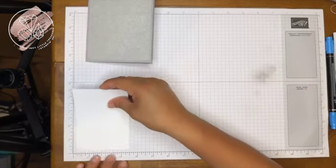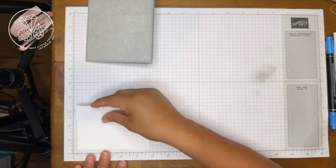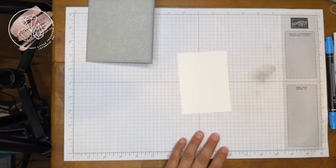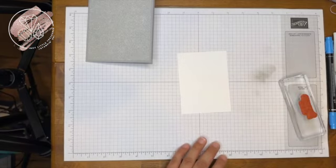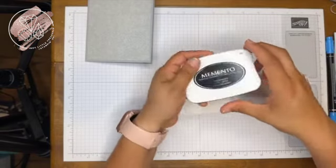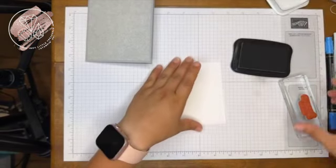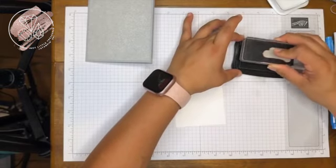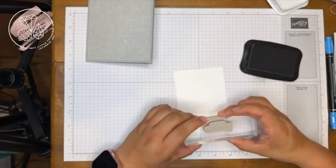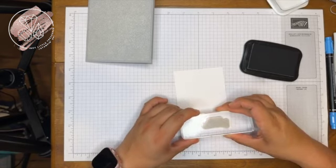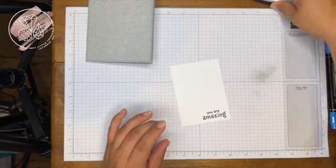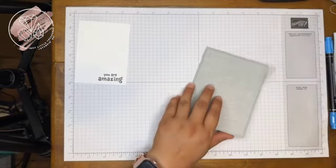This is cut at three and a quarter by four and a half. We're using the You Are Amazing sentiment right there. And we're putting it on Tuxedo Black Memento ink. So we're just going to ink this up and putting her right around here. There we go. Oh, I forgot something.